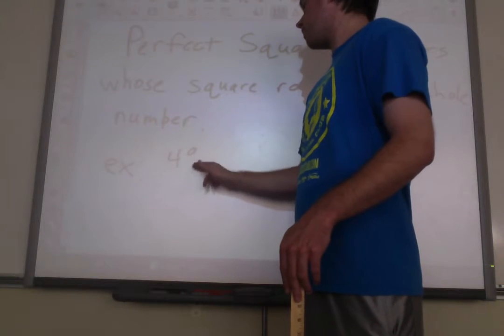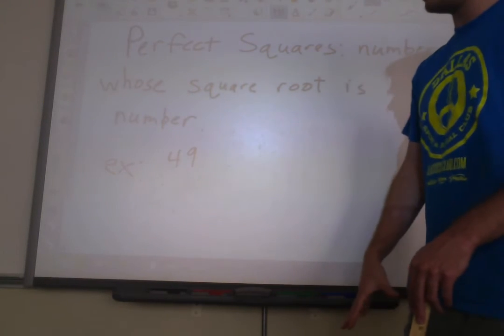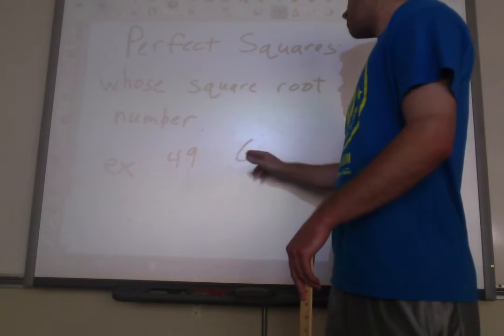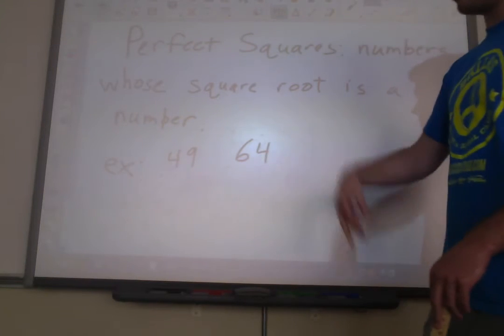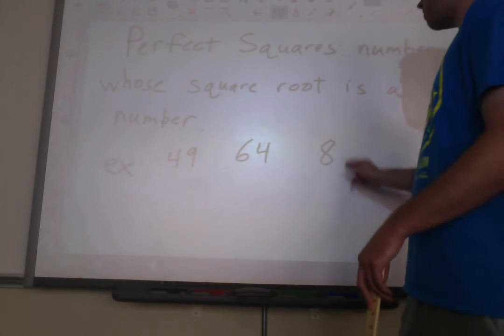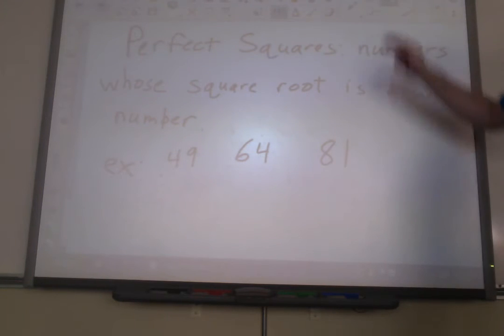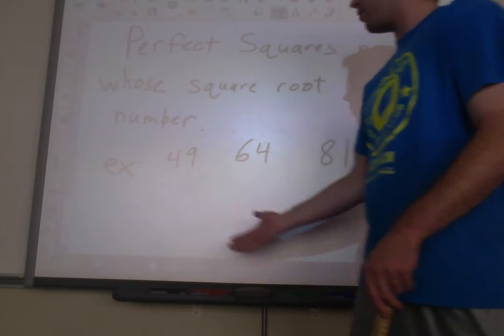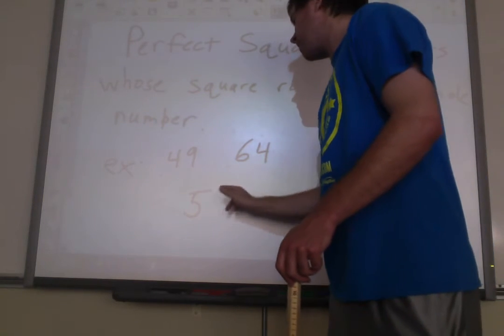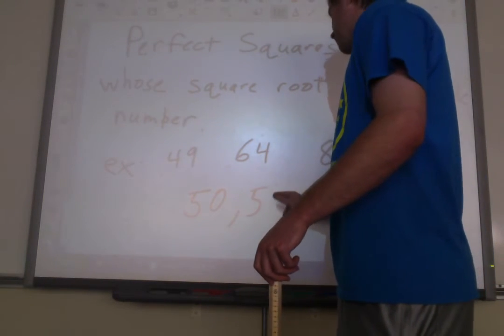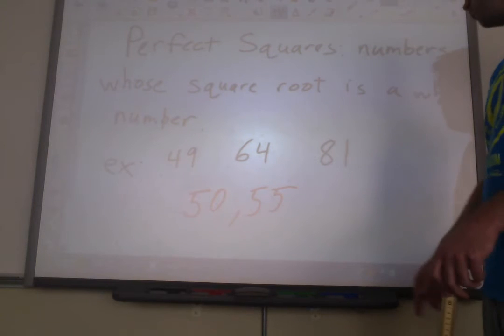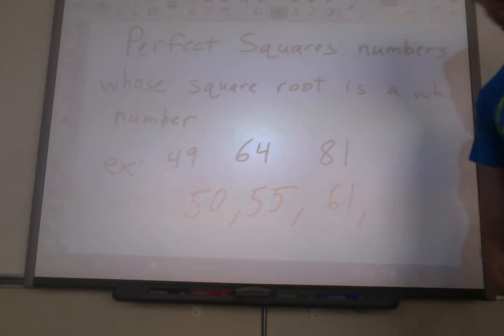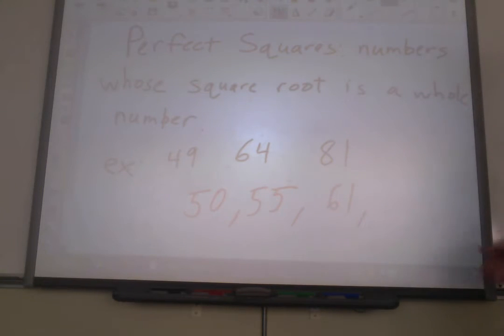Let's see. 49 is a perfect square, because the square root of it is 7. 64 would be one, because the square root of it is 8. 81, because the square root of that is 9. Numbers that would not be perfect squares would be any number other than those. So 50, that would be an example. 55, not going to work out. 61, not going to work out. There's tons of examples of numbers that are not perfect squares. There's far more numbers that are not perfect squares than numbers that are.